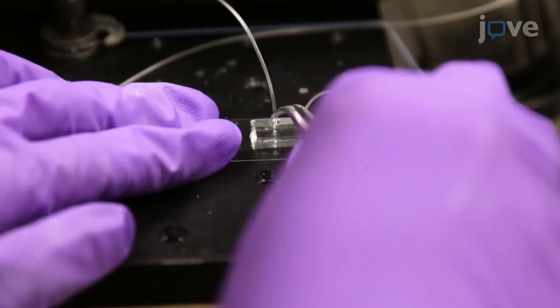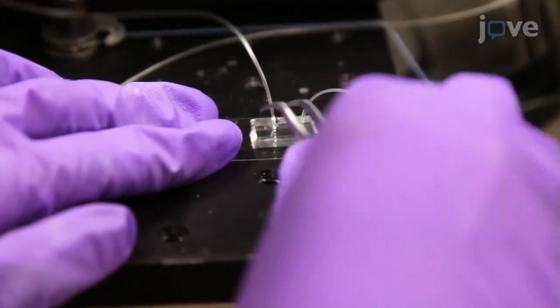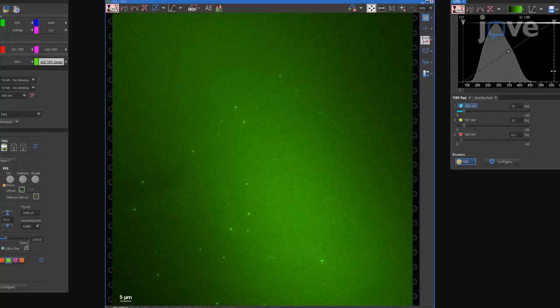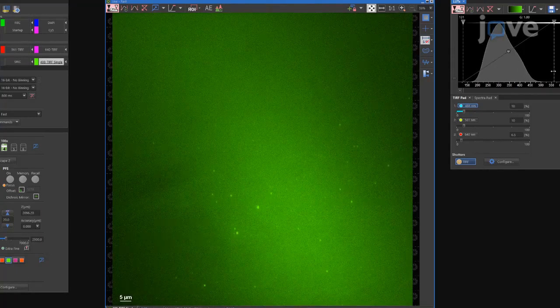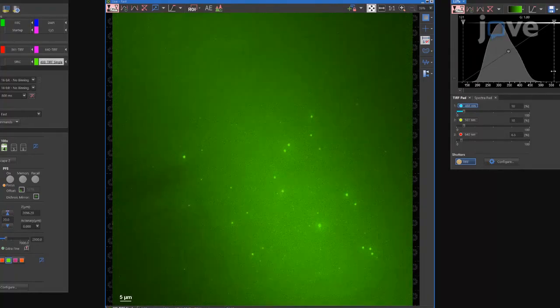Fluorescence microscopy allows real-time in-situ visualization of single molecules in physiological flow environments with high temporal and spatial resolution. This is unmatched by other techniques like AFM.